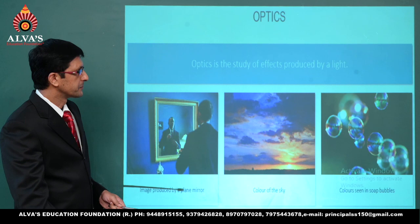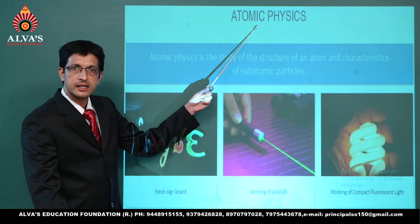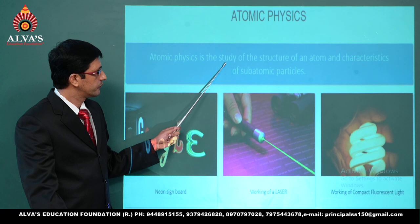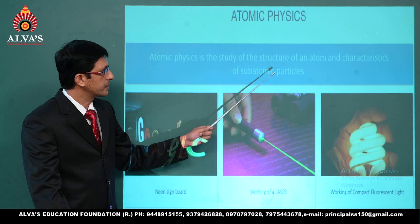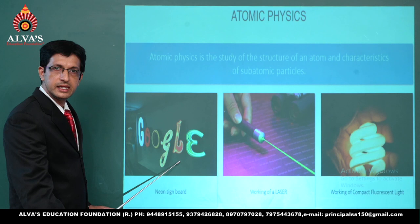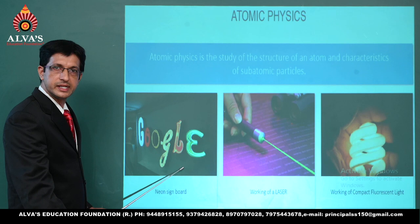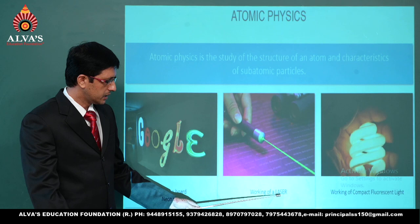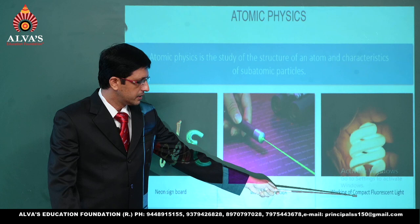Atomic physics happens to be the study of the structure of an atom and characterizes subatomic particles. Examples include a neon signboard which we usually come across in shopping centers and big malls, a display board of that type. In the second picture we observe a laser, and in the third one a CFL — compact fluorescent light.